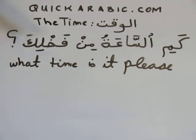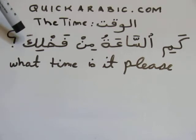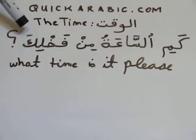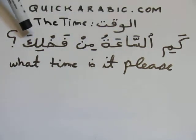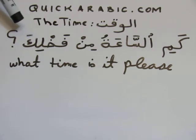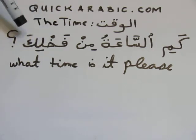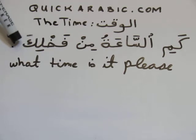Actually, this is من فضلكَ. But since this is the end of the sentence, the last letter always comes مسكون. So we say من فضلكْ. Even if it's written من فضلكَ, we pronounce it من فضلكْ, since this is the end of the sentence.